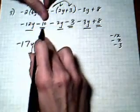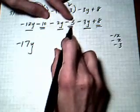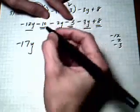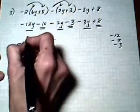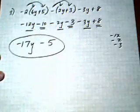And then, I've got the numbers. Minus 10, minus 3 is minus 13. Plus 8 would be minus 5. So, it's minus 17y, minus 5.